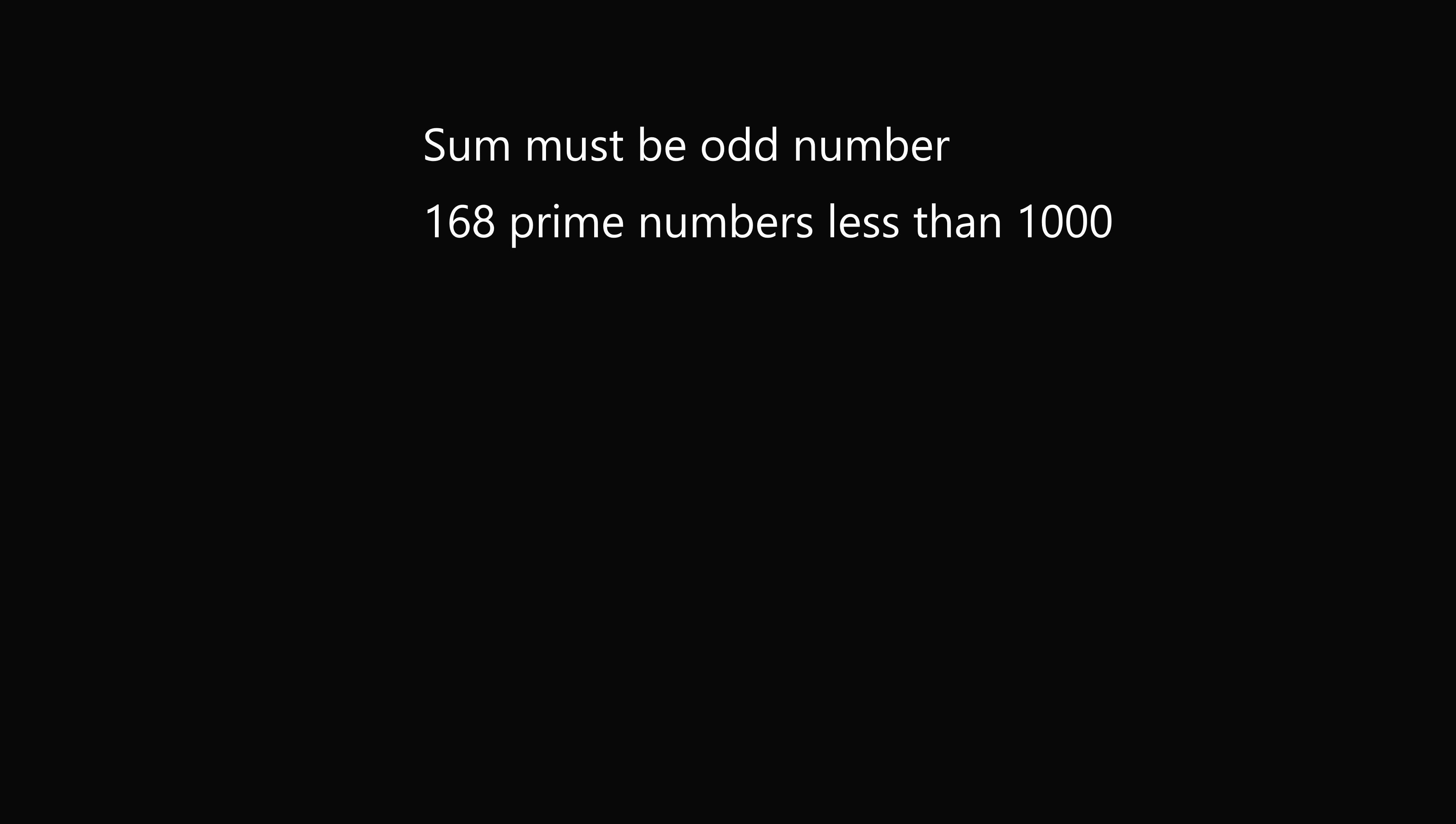So let's look at our answer choices. We can eliminate C and D because those are even numbers. So all that remains is to distinguish between A and B. So how can we do that?